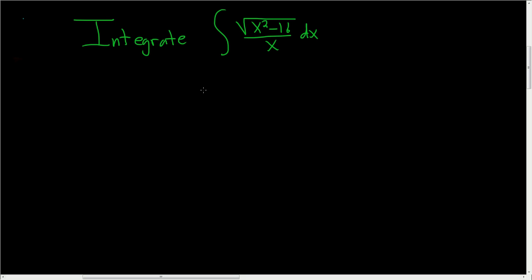We have an integral that appears to fit the form of a trigonometric substitution. Recall if you have an integral of the form u squared minus a squared, then u equals a secant theta.